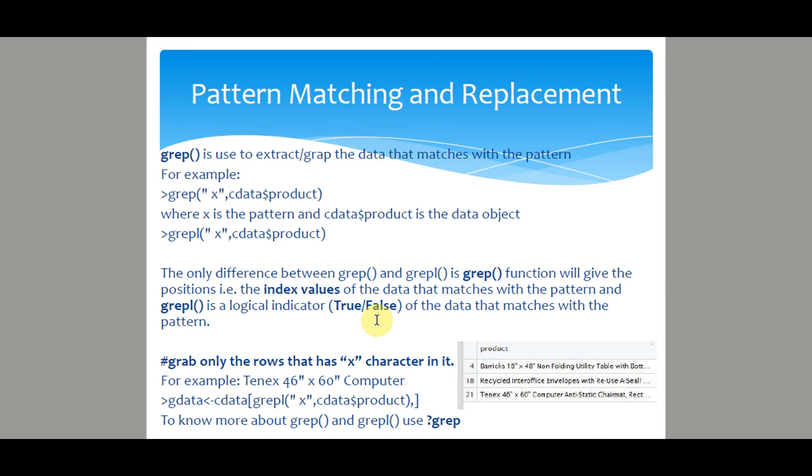Now from this sample, we will grab only the rows that has x character in it. For example, 46 x 60 computer, that is multiplied by 60 computers. Define the grep with pattern and the data in the row and space in the column for all columns, that is row column format. Now this will give rows having the value x in the production column.